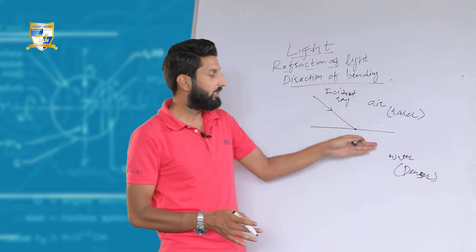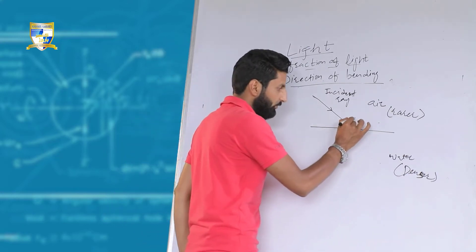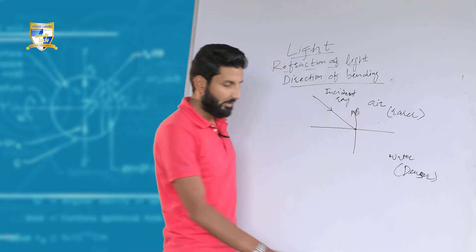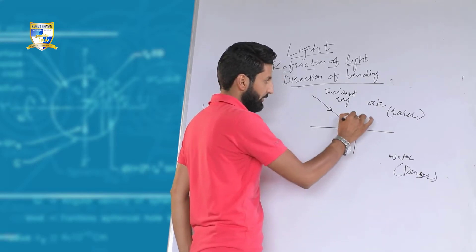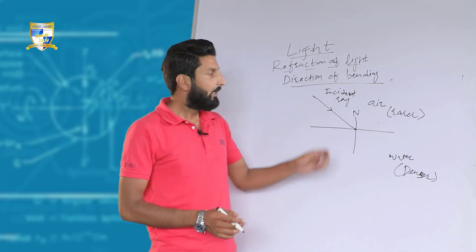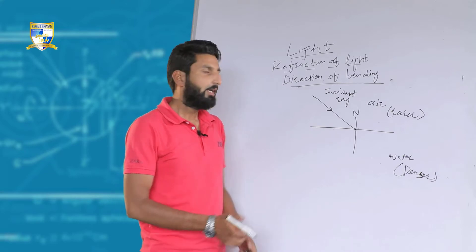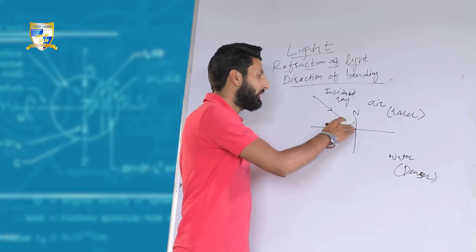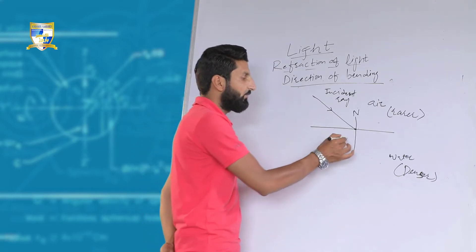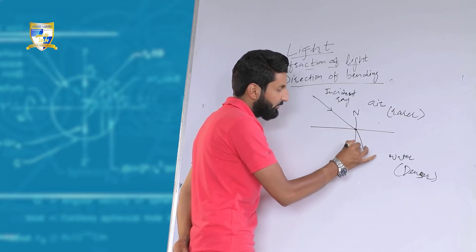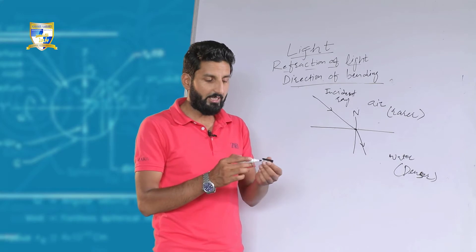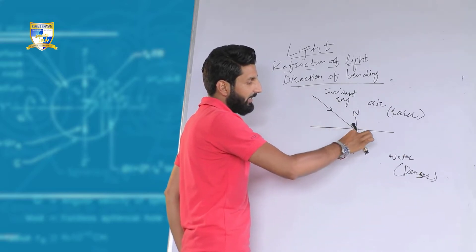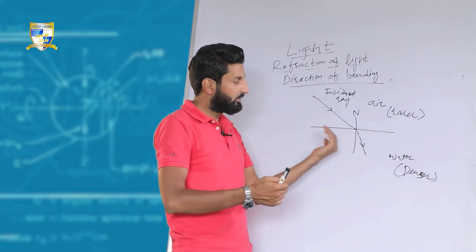Because the speed of light in air is more in comparison to that of water. Upon the point of incidence we draw a perpendicular called the normal, represented by N. This is the incident ray striking the surface of water. As it enters the water, the medium changes, the speed of light changes, and so the direction of propagation changes. The ray of light would bend — it would bend towards the normal — so it would deviate towards the normal rather than continuing straight.